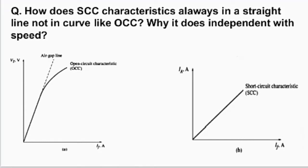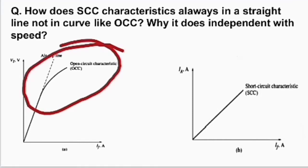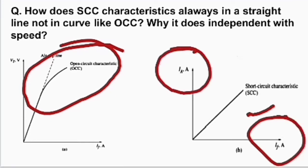Because of saturation, this bend occurs in the OCC curve. Now looking at the SCC characteristics — this is the graph between armature current and field current — it is always a straight line. That means due to field current, no saturation condition is found in SCC characteristics.